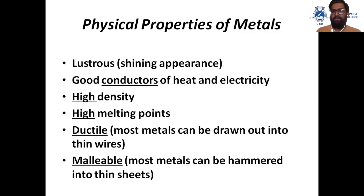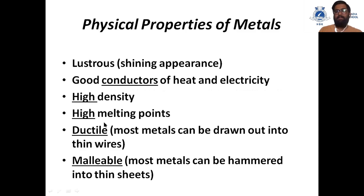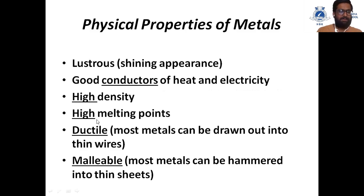Starting with the first topic: physical properties of metals. Metals are lustrous — they have a shining appearance. Metals are good conductors of heat and electricity. They have high density, meaning in a small volume a large number of atoms are present.